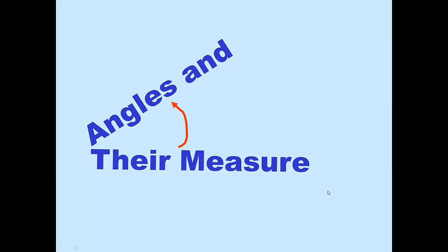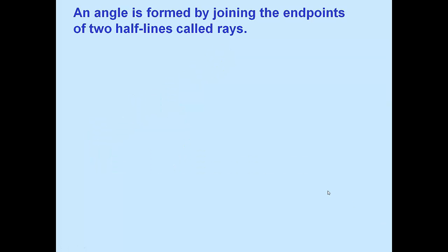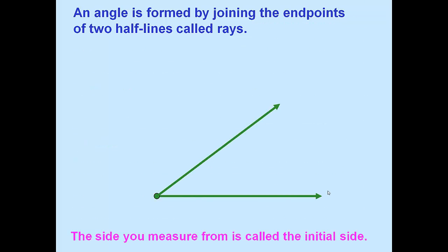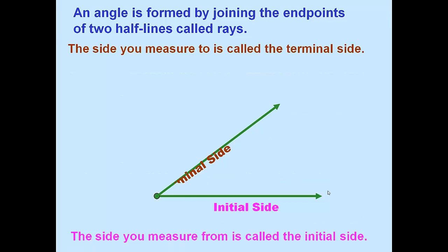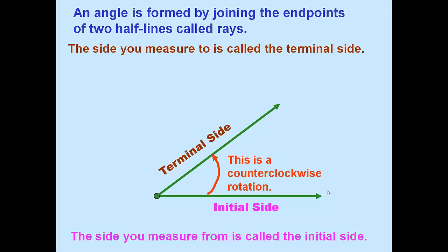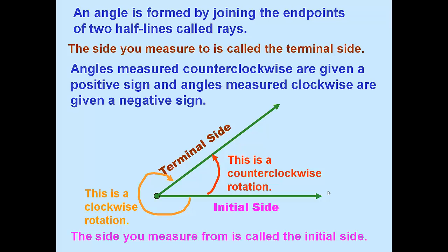Let's begin by talking about what an angle is and how it's measured. An angle is formed by joining the endpoints of two half lines called rays. The side that you measure from is called the initial side, and the side that you're measuring to is called the terminal side. Normally angles move in a counterclockwise rotation from initial to terminal side. If they move clockwise, in the direction of the hands of a clock, we call that clockwise rotation. Angles measured counterclockwise are given a positive sign, and angles that are clockwise are given a negative sign.